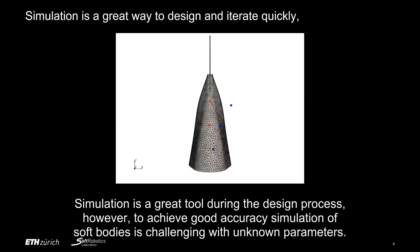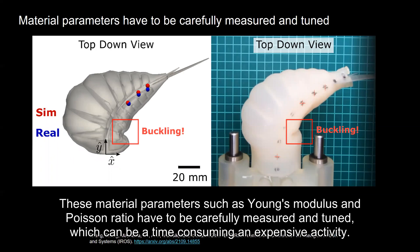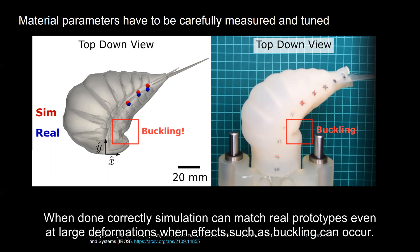Simulation is a great tool during the design process. However, to achieve good accuracy of simulation of soft bodies is challenging with unknown parameters. These material parameters, such as Young's modulus and Poisson ratio, have to be carefully measured and tuned, which can be a time consuming and expensive activity. When done correctly, simulation can match real prototypes, even at large deformations, when material effects such as buckling can occur.